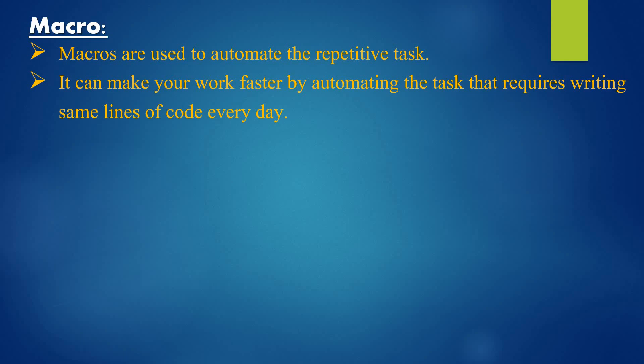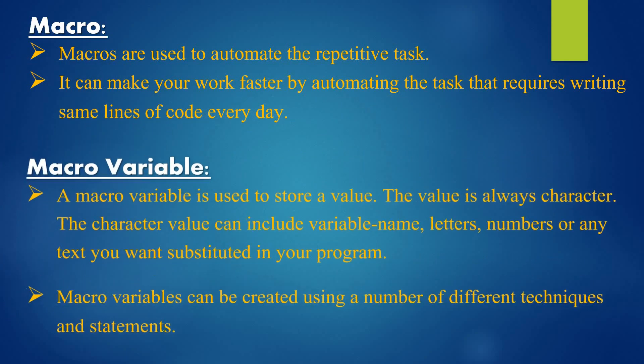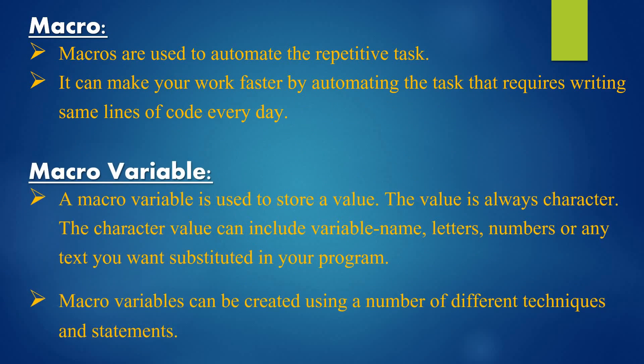Next, let's see what is a macro variable. A macro variable is used to store a value. The value is always character — so whatever we store in a macro variable, the value stored is a character. The character value can include variable names, letters, numbers, or any text you want to substitute in your program. Macro variables can be created using a number of different techniques and statements. In this video we'll see five different ways to create macro variables and use them.